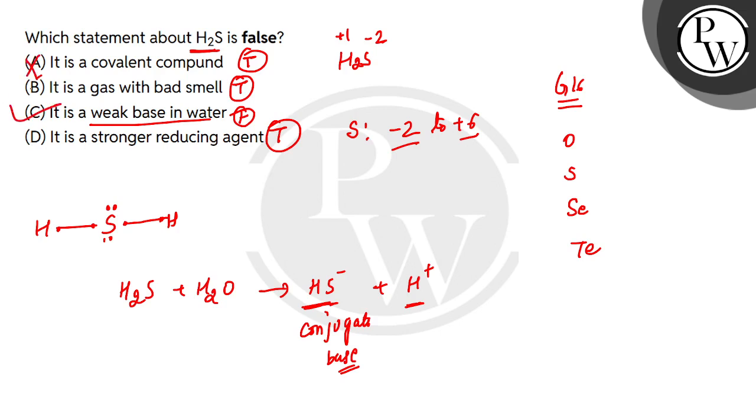So if there is a false statement in C option, the C option is our answer. And the rest are correct. I hope you understood. Thank you.